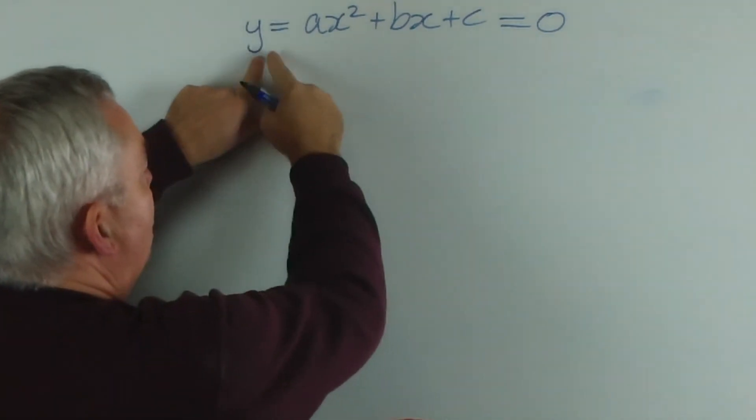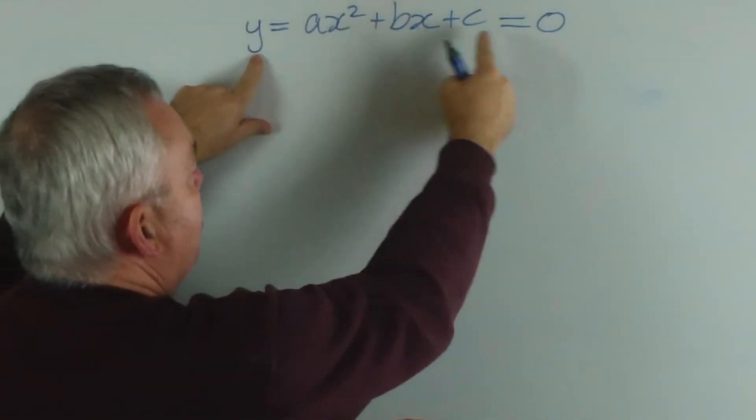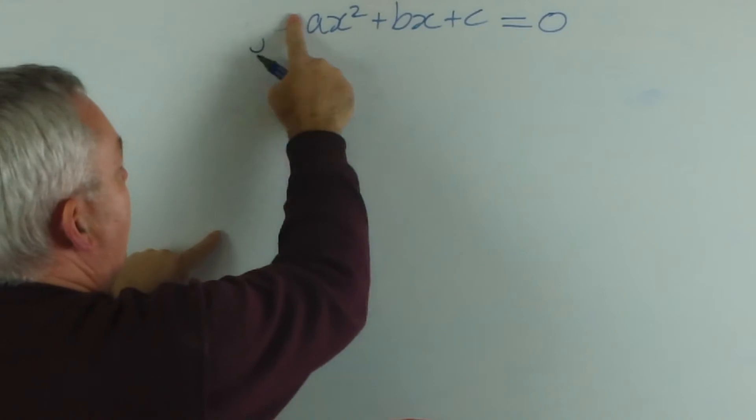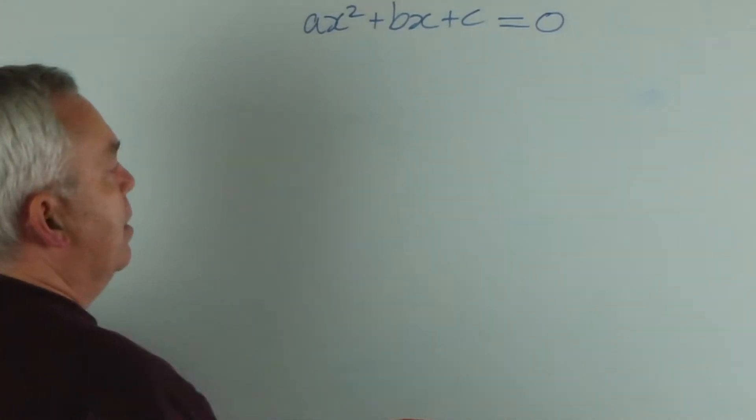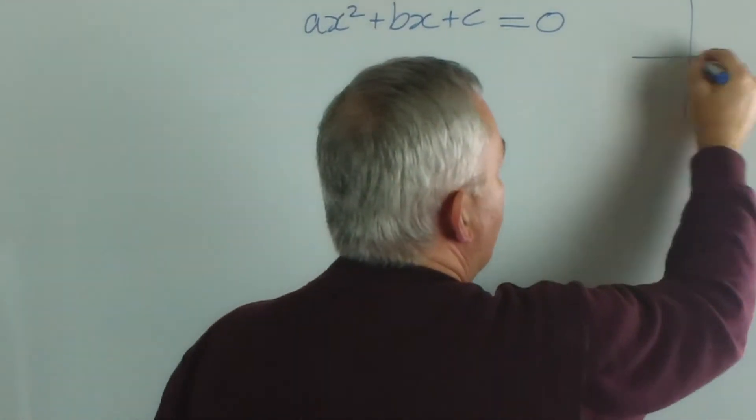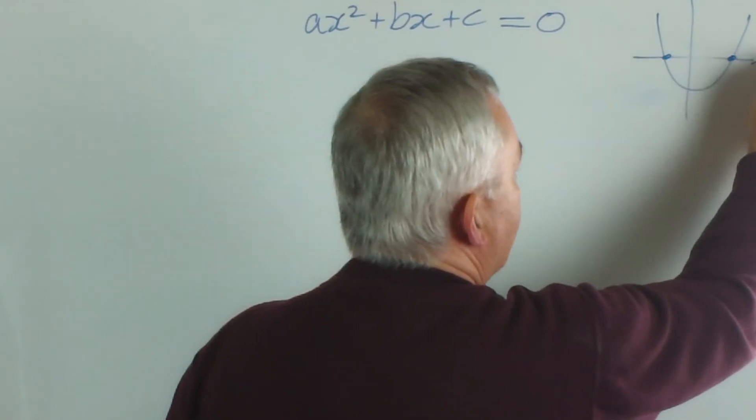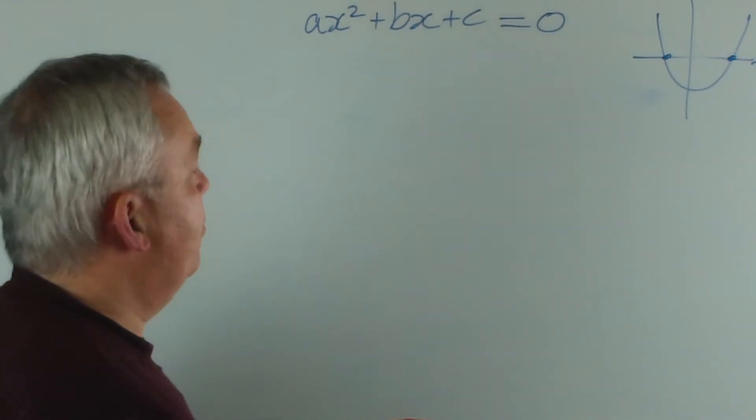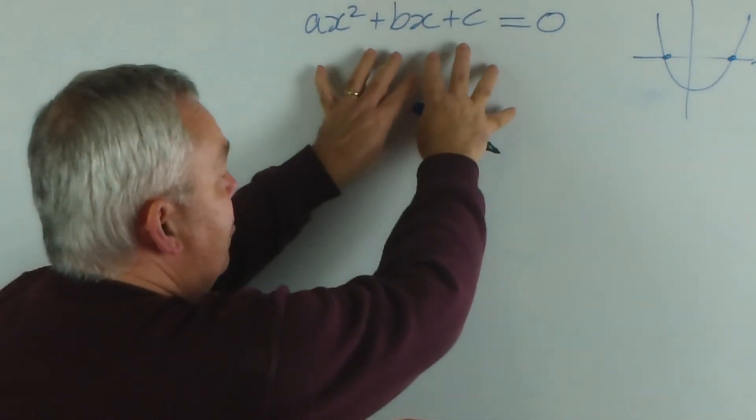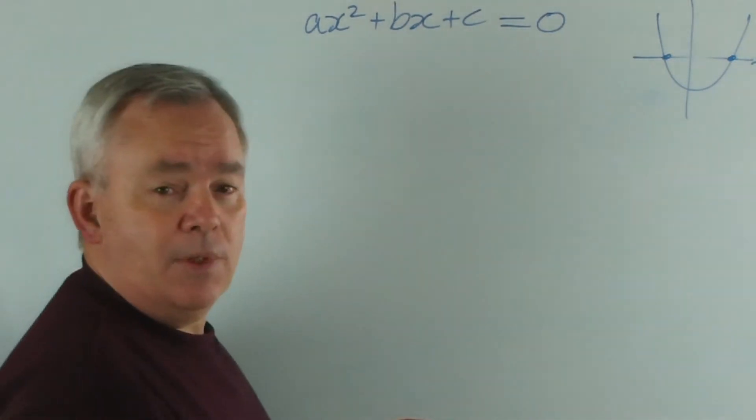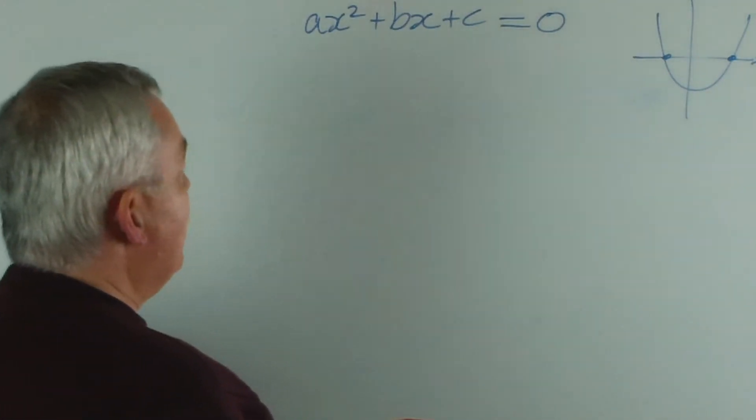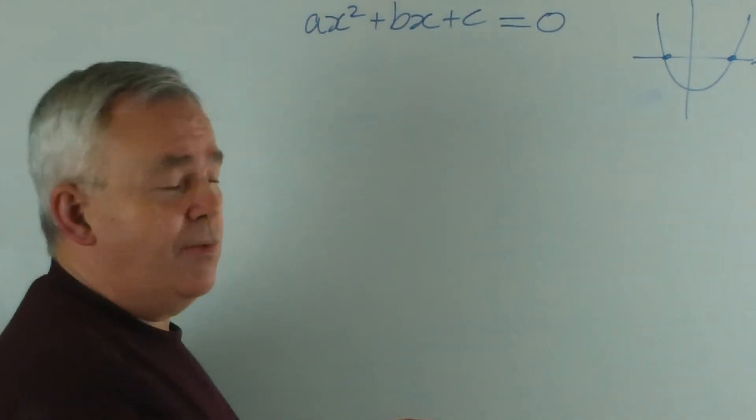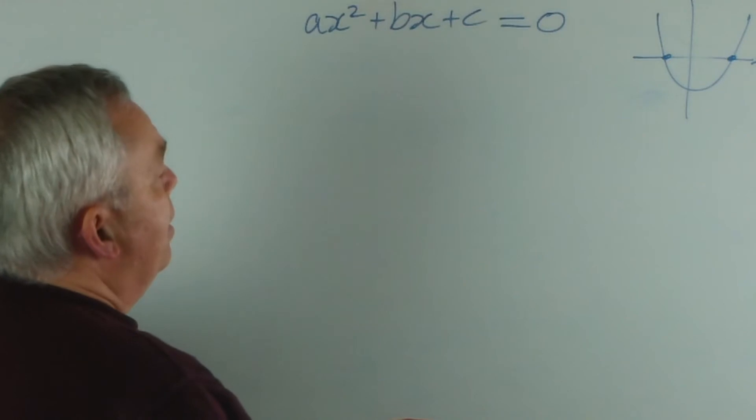But to find the roots, we solve y equals zero, which in fact is the x-axis. So we're finding the position where a parabola will cross the x-axis. That's what the quadratic formula is for. It is, in fact, nothing more than a rearrangement of this equation, making it very explicit what the x-values are.